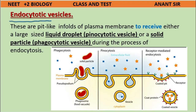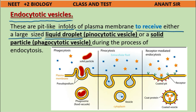Endocytotic vesicles are pit-like infolds of the plasma membrane to receive either a large-sized liquid droplet (pinocytotic vesicle) or a solid particle (phagocytotic vesicle) during the process of endocytosis.